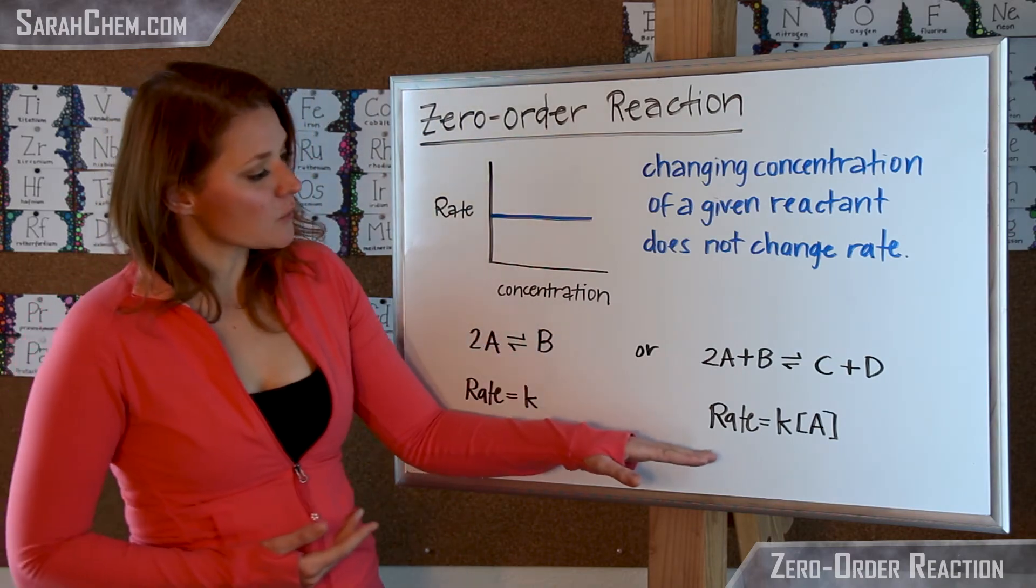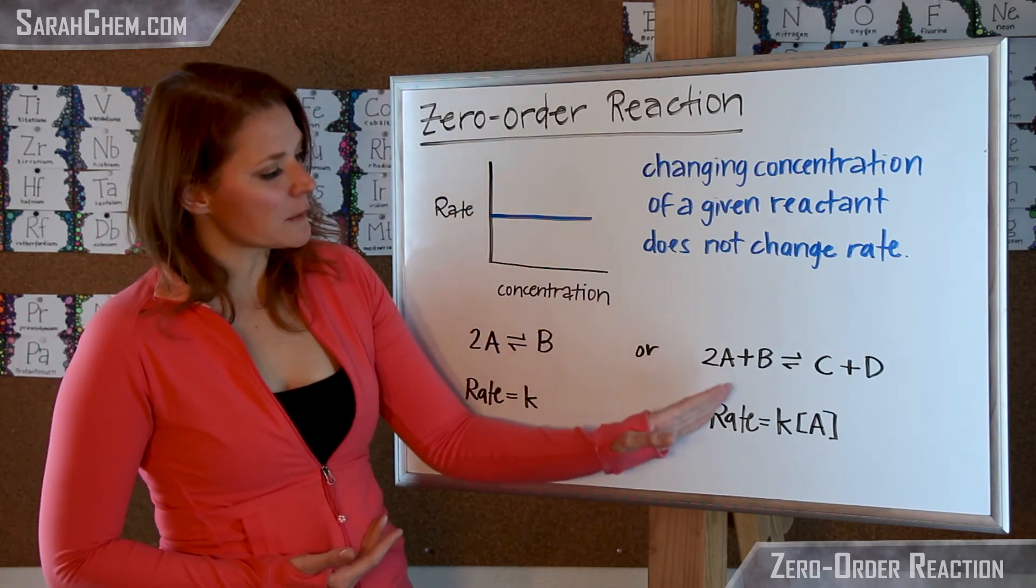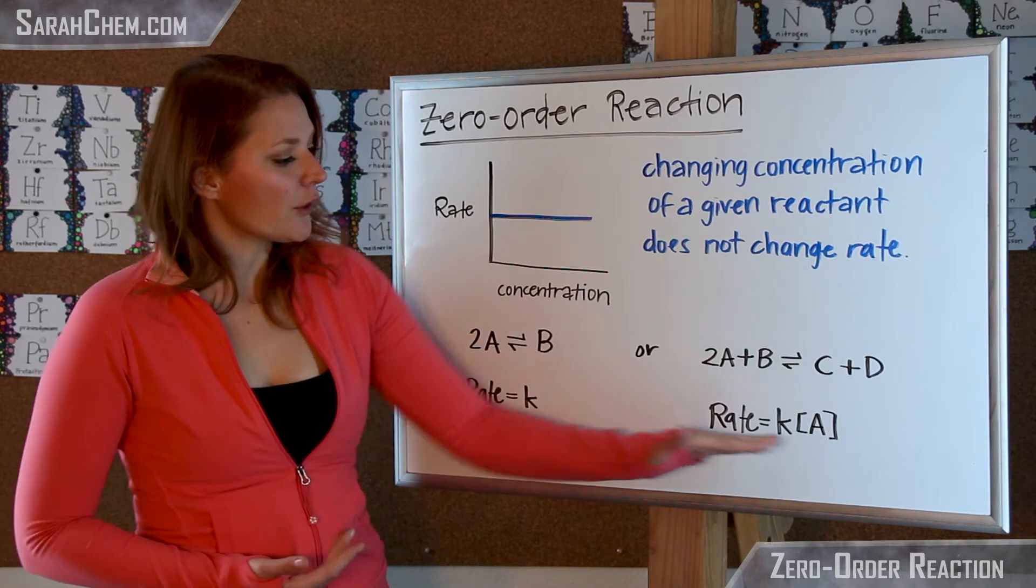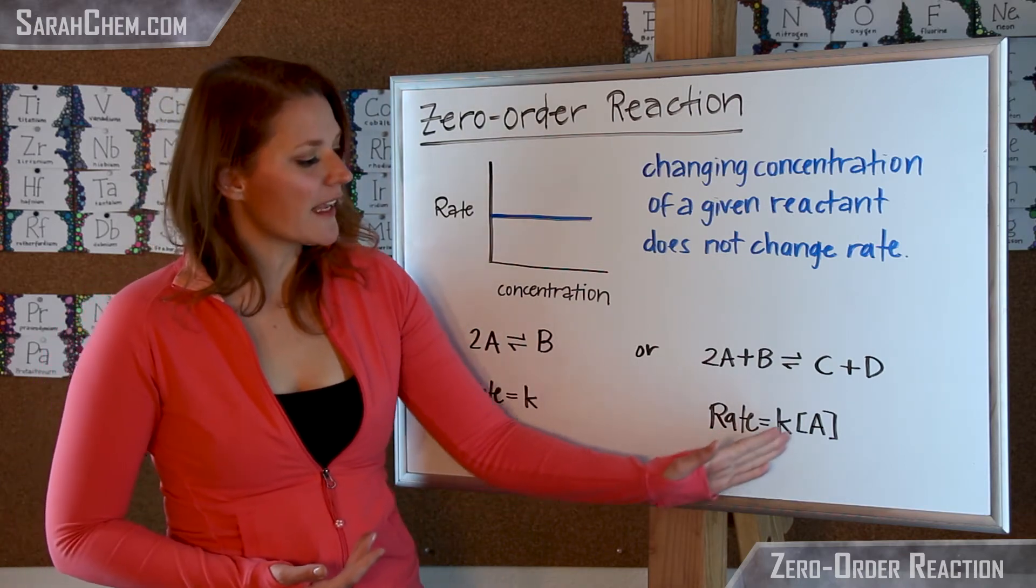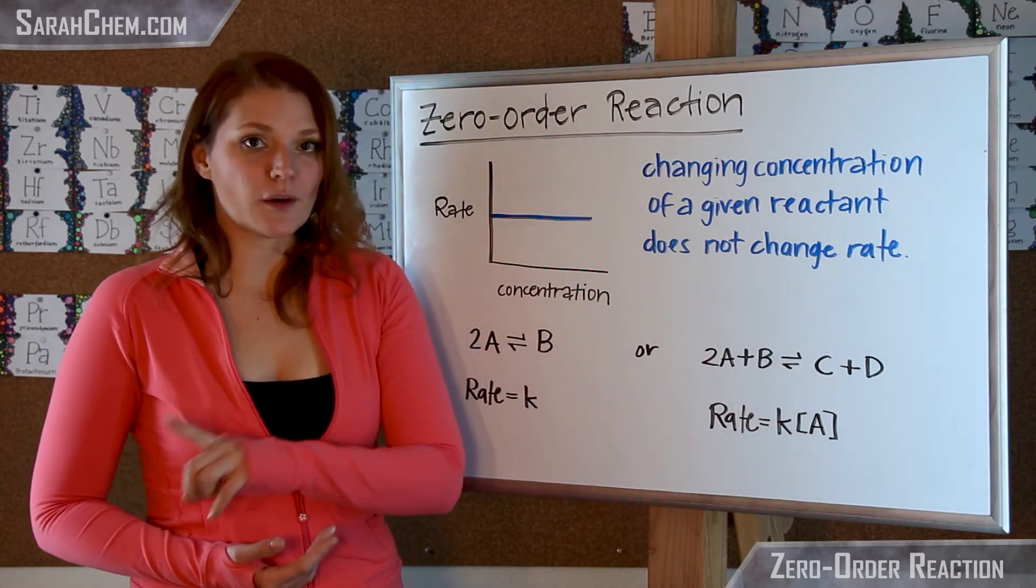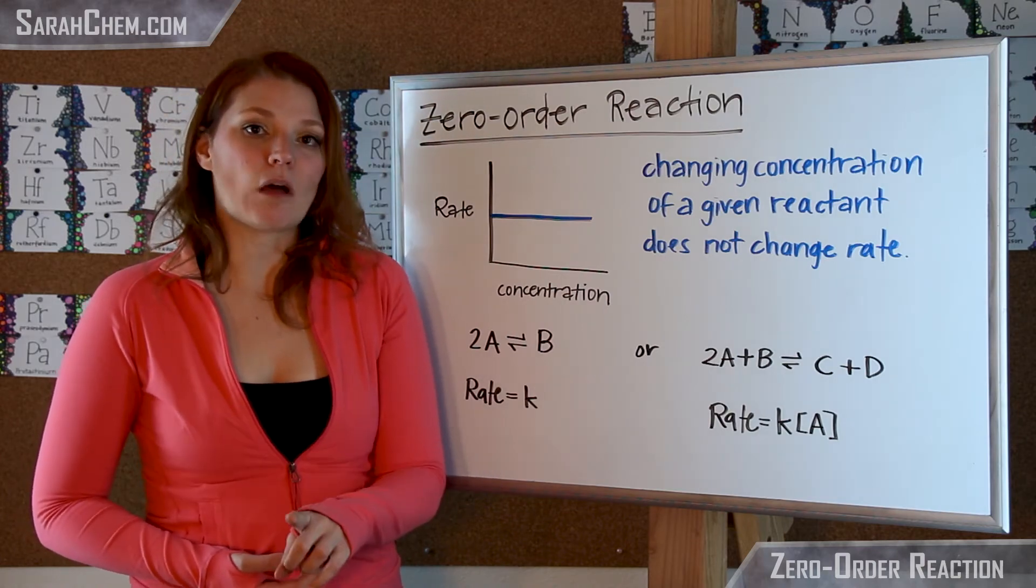We could look at it here as well. Here we have 2A plus B goes to C and D. Now if you look at the overall rate, we have the rate is equal to k times the concentration of A. Notice though that B is not part of the rate law.